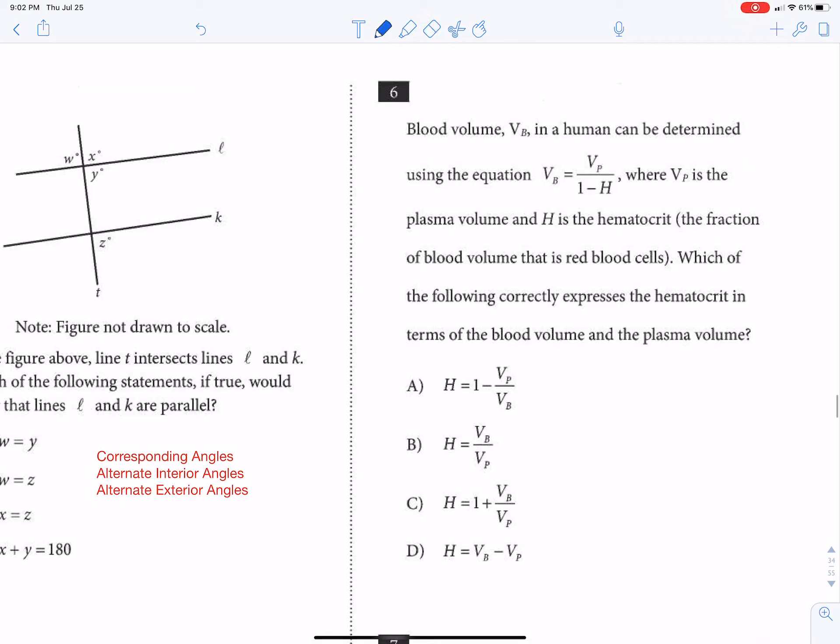Okay, so on number six they want us to get h by itself. You can see that from all the answers. The first thing we do when we have a fraction and we want to get rid of it is we multiply both sides by the denominator. So we're going to get vb times one minus h equals vp.